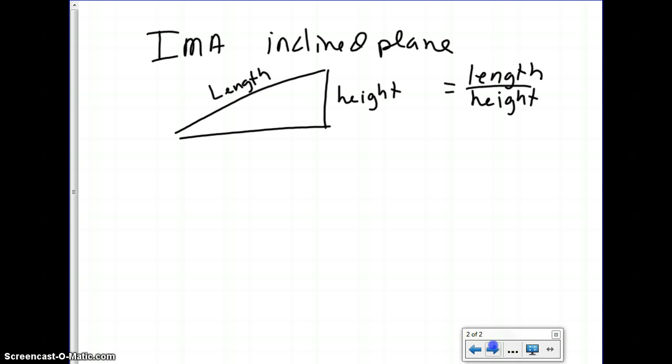Remember our mechanical advantage is a naked number. The units will cancel out no matter what units of measure you're using. Since a wedge is simply two inclined planes placed back to back, we can use the same IMA formula. It's going to be the length or the slope. We're going to call this the length and this the height.